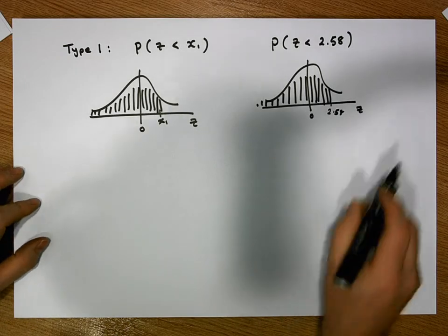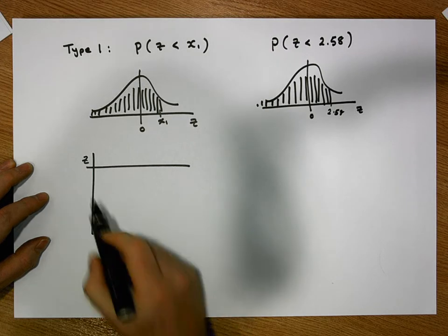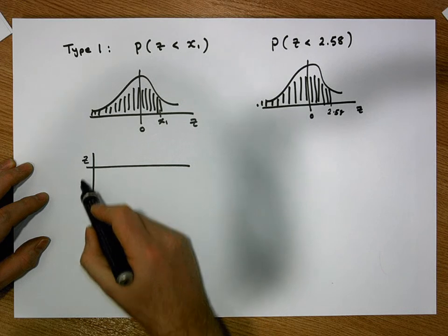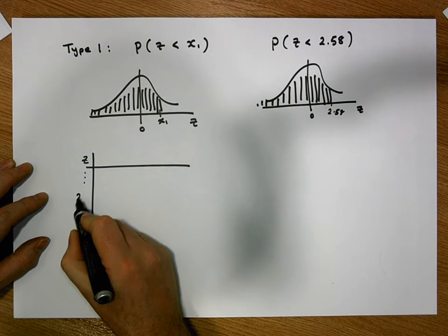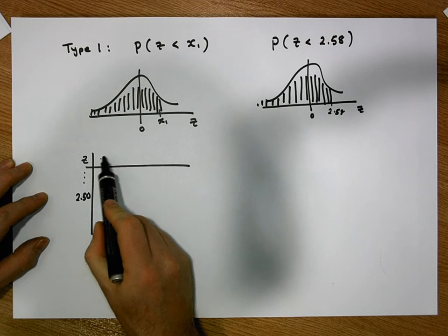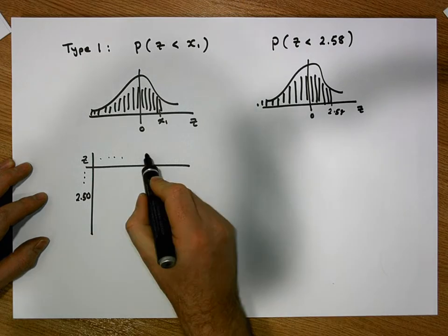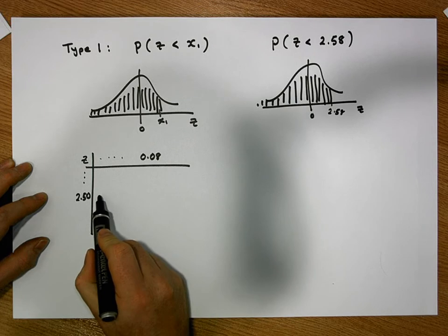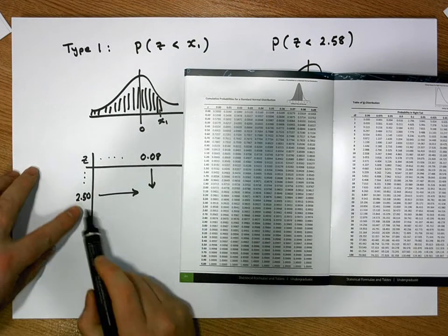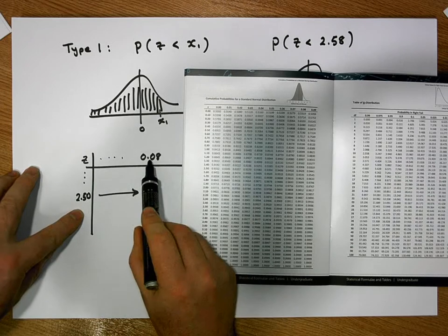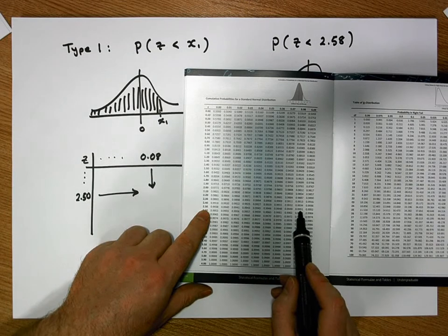When we go to the Z tables, the first significant digit and first decimal digit are listed down the first column, so we go down to 2.50. The second decimal digits are listed across the first row, and the second decimal digit for 2.58 is 8, so we look at column 0.08. When we triangulate — looking up row 2.5 and column 0.08 — we get the value 0.9951.